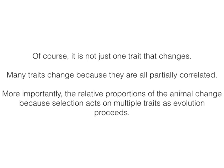Of course, it's not just one trait that changes — many traits change because they're all partially correlated with one another. More importantly, the relative proportions of the animal change because selection acts on multiple traits simultaneously. So it might be that selection makes hippos smaller and smaller because food is scarce, while also acting on ear shape, making them more pointed.